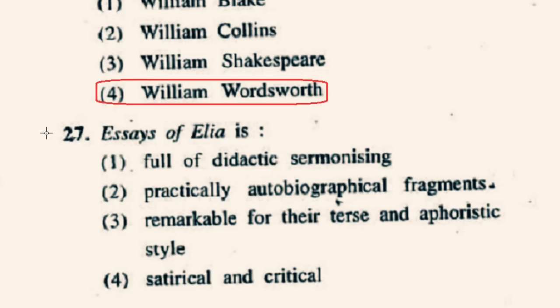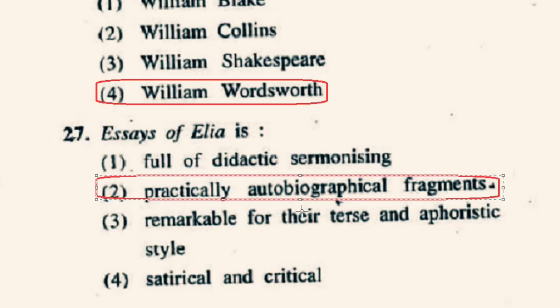Question number 27: Essays of Elia is what? Charles Lamb's Essays of Elia is a collection of essays first published in book form in 1823. Last Essays of Elia was issued in 1833. The essays first began appearing in the London Magazine in 1820. Essays of Elia is practically autobiographical fragments. So option 2nd, practically autobiographical fragments, is the correct option.